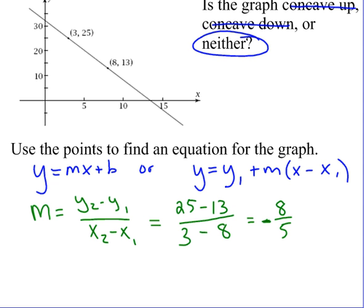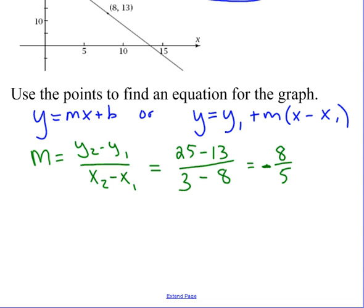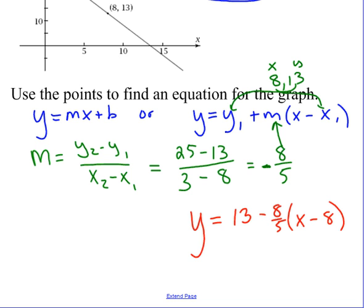Now, some of you are probably more comfortable with y equals mx plus b, but I want to encourage you to use point slope form, especially those of you going on to AP Calc, because the AP exam uses point slope form a lot, as well as the easier form to use at this point, because you have the slope and you have two points. So if I use the point 8 and 13, I just plug them in, and my equation just becomes y equals 13 minus 8 fifths x minus 8, and I'm done.